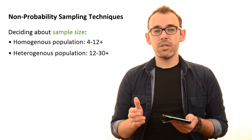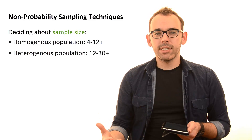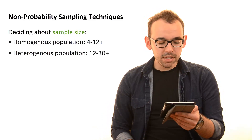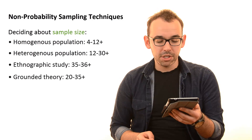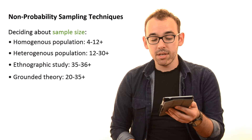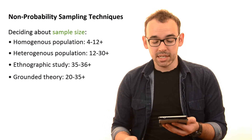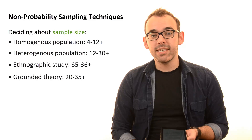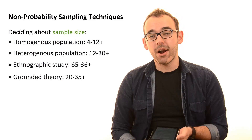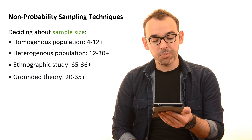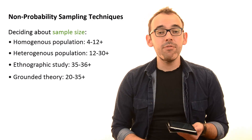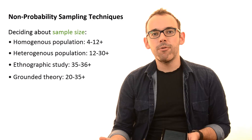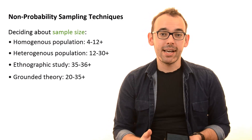The second recommendation regards your research strategy — the more complex the research strategy, the larger the sample size you need. For instance, if you go for a really complex research strategy such as ethnographic or grounded theory, your sample sizes increase significantly. For an ethnographic study, your sample size should be at least 35 to 36 cases, and for grounded theory, at least 20 to 35 cases. For a simpler research strategy such as case study, you can go for lower sample sizes such as 5, 10, or 12 cases.